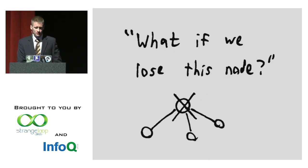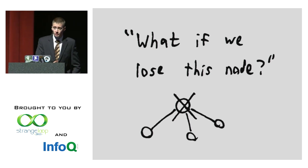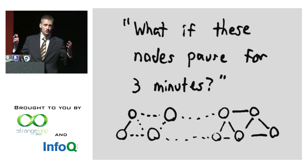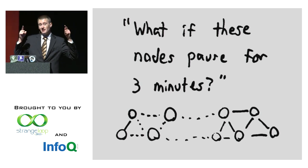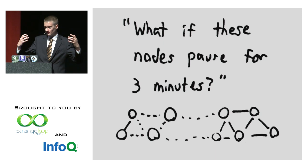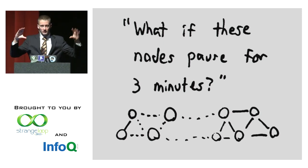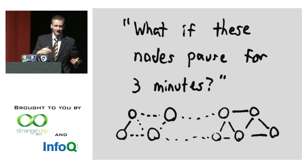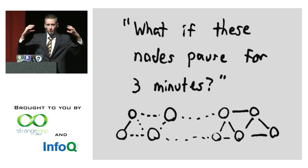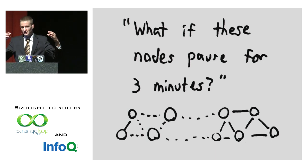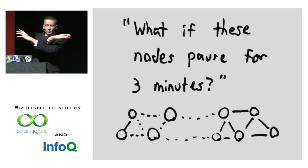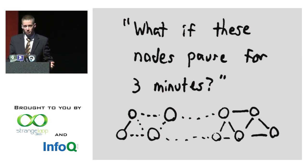Go back to your architecture diagrams and ask questions: What happens if a node disappears? What happens if nodes pause or hiccup for three minutes? GitHub, for example, had a network event that caused packets to get delayed for five minutes. They had a STONITH cluster — each node declared the other unavailable and fired its shoot-the-other-node-in-the-head message, but the bullets were suspended in mid-air because of the network partition, held in switch buffers for five minutes. Then the partition sorted itself out and bullets slammed into both servers simultaneously.